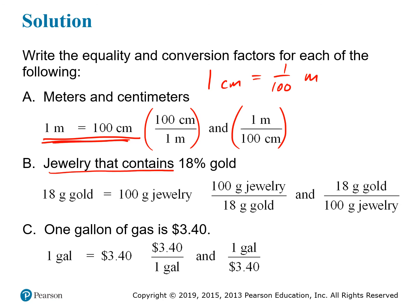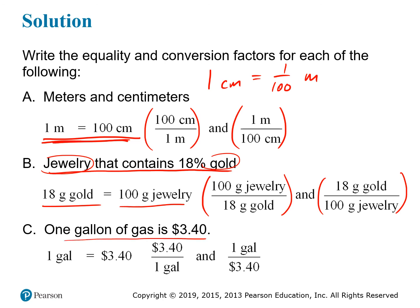For the second one, jewelry that contains 18% gold: the total is the jewelry and the part is the gold. So for every 100 grams of jewelry, you have 18 grams of gold — that's your equality. You can express this as two conversion factors: 100 grams of jewelry per 18 grams of gold, or 18 grams of gold per 100 grams of jewelry. The last one is that one gallon of gas costs $3.40. The mathematical equivalence between one gallon and $3.40 expresses this relationship. We can write this as $3.40 per gallon, or one gallon per $3.40.